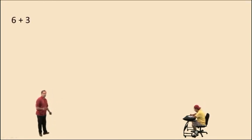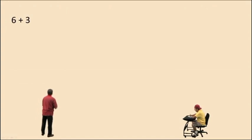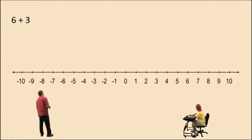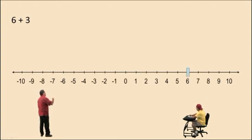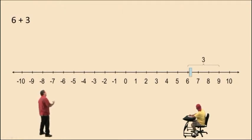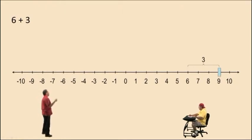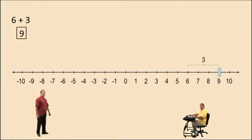Today we're going to do basic addition, 6 plus 3. Let's demonstrate addition on a number line. Let's start at 6 and adding 3 means you're going to move to the right 3 units. And what do you get, Charlie? 9. Very nice there, Charlie.